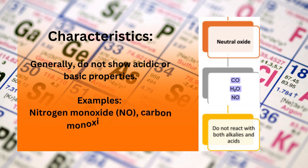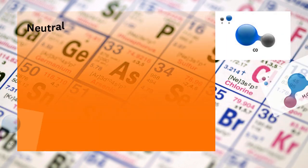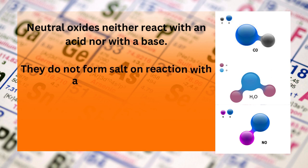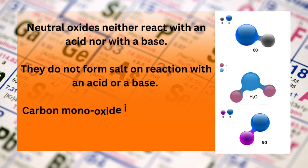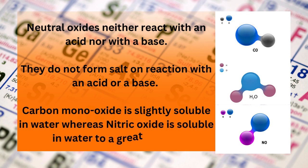Examples of neutral oxides include nitrogen monoxide (NO) and carbon monoxide (CO). Neutral oxides neither react with an acid nor with a base, and do not form salt on reaction with an acid or a base. Carbon monoxide is slightly soluble in water, whereas nitric oxide is soluble in water to a great extent.